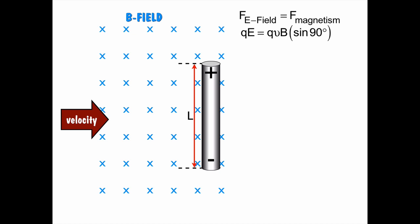So that means that qE is equal to qvB sin theta. Well, sin theta is just going to be one. So qE is equal to qvB. The q's divide out. So that means that E is equal to v times B. That's the electric field is equal to the velocity times the B field that the wire is in.